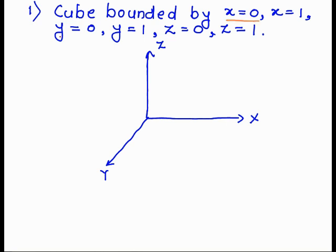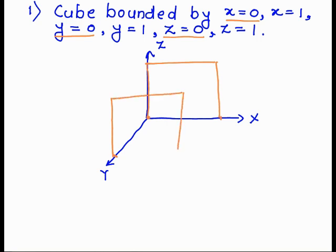Since x=0, y=0, and z=0, one corner of the cube is at the origin (0, 0, 0). Also, x=1 means the length along x is 1, and similarly y=1 and z=1. So we fix the intersecting points of the cube along the x, y, and z axes, then complete the cube in the x-z plane, and connect the remaining edges.